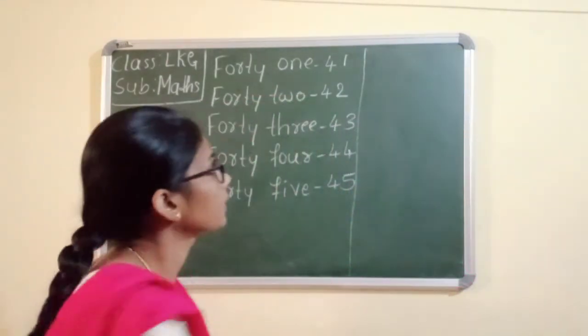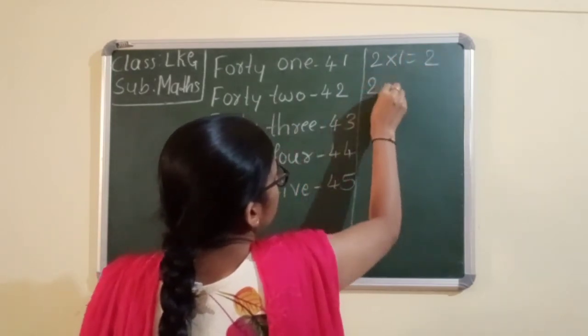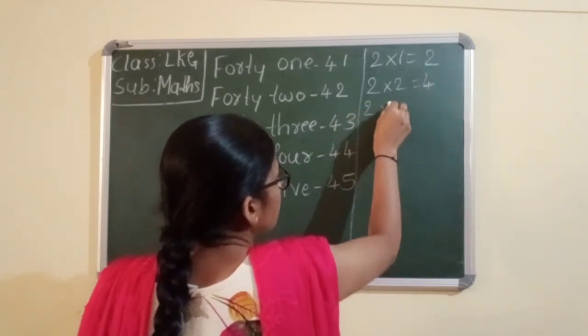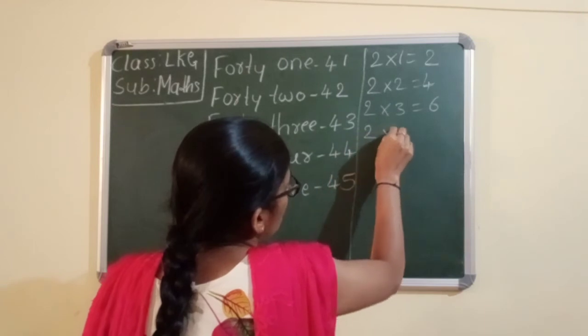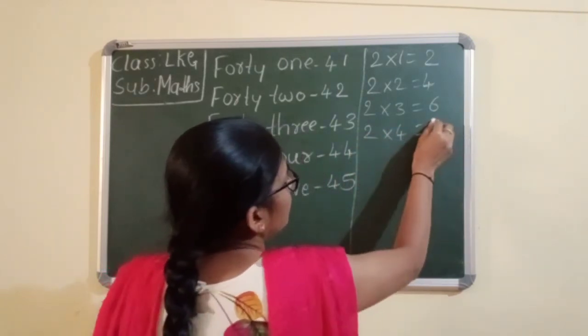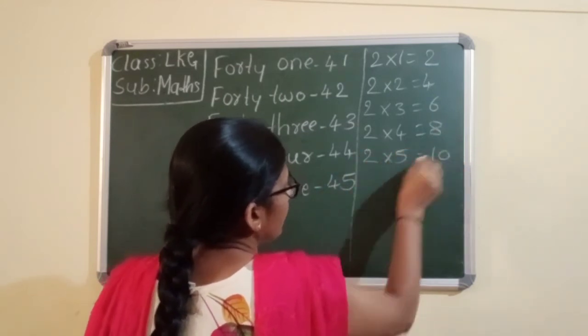Two ones are two. Two twos are four. Two threes are six. Two fours are eight. Two fives are ten.